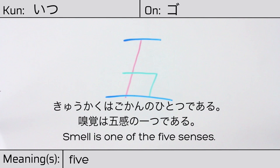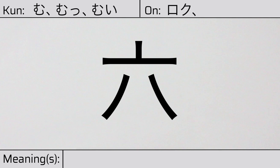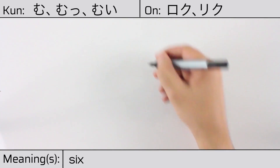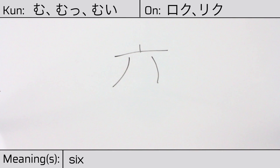This kanji has kunyomi or Japanese readings of mu, mu, or mui, and it has onyomi or Chinese readings of roku or riku. This character has the meaning six. Here is the stroke order.